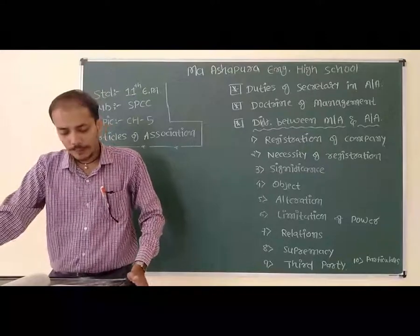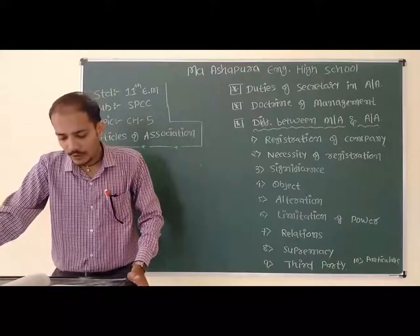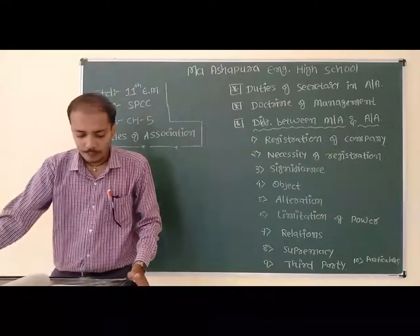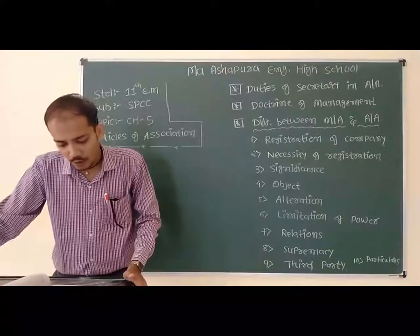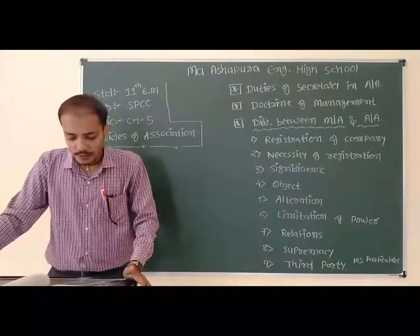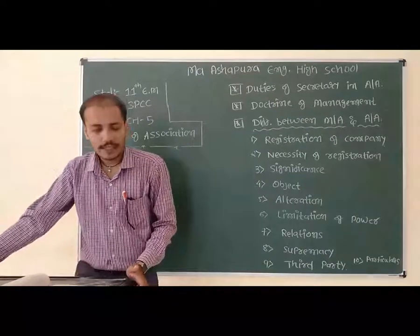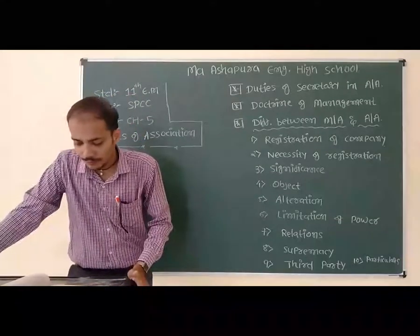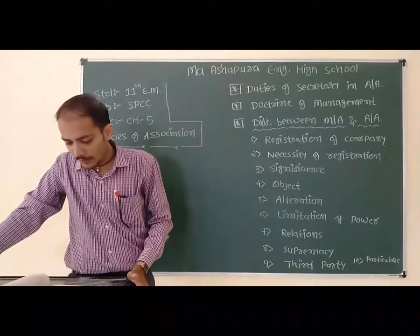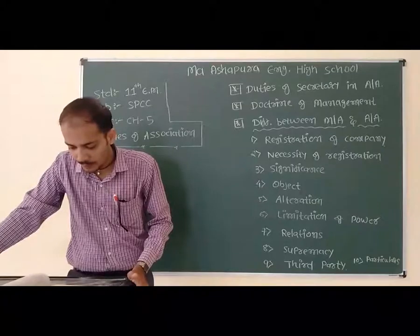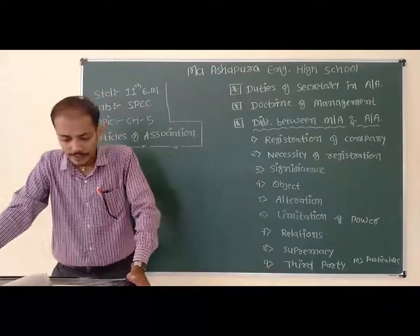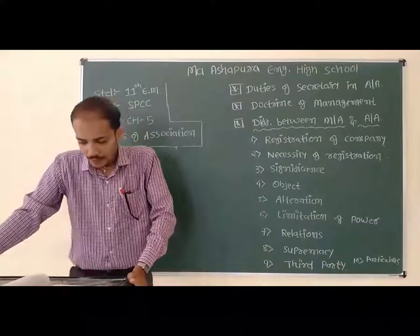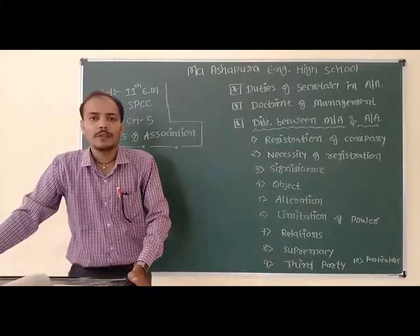Point number 8: Relation with outside persons and the public at large. The internal relationship between company and its members — Articles of Association has supremacy. Memorandum of Association is not subordinate to the Articles of Association. Any provisions in the Articles of Association against the Memorandum of Association are unavoidable. Point number 9: Third party — cannot benefit from the provisions of either the Memorandum of Association or the Articles of Association.